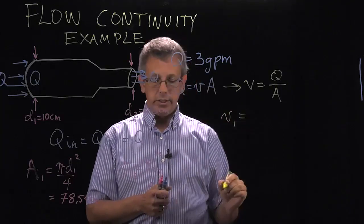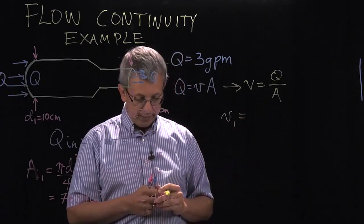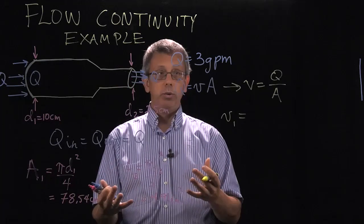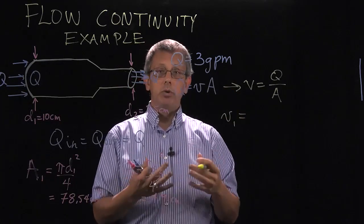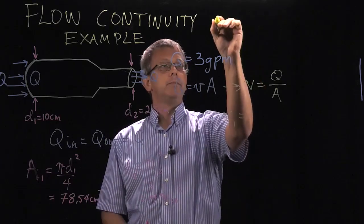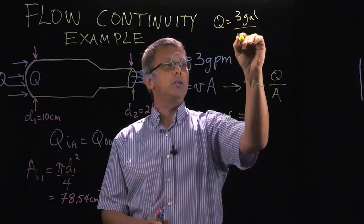So in this case, velocity 1 equals our flow, which is in gallons per minute. Well, we might actually have to do something to change our units here. Let's convert our gallons per minute into a metric unit. So if I have 3 gallons per minute,